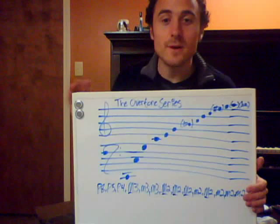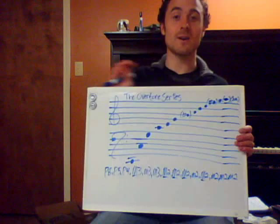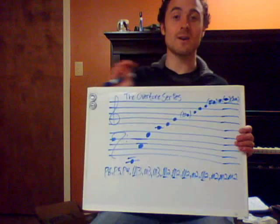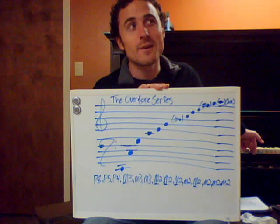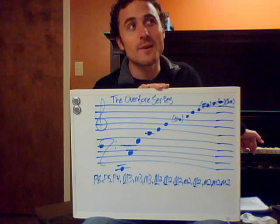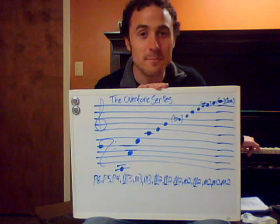Here we have our established tone: C. Let's say I have a piano behind me — it's a little out of tune — but let's say I play C. I am playing a C. And you can hear in the background the resonance of this tone and its influence on the atmosphere as it resonates.